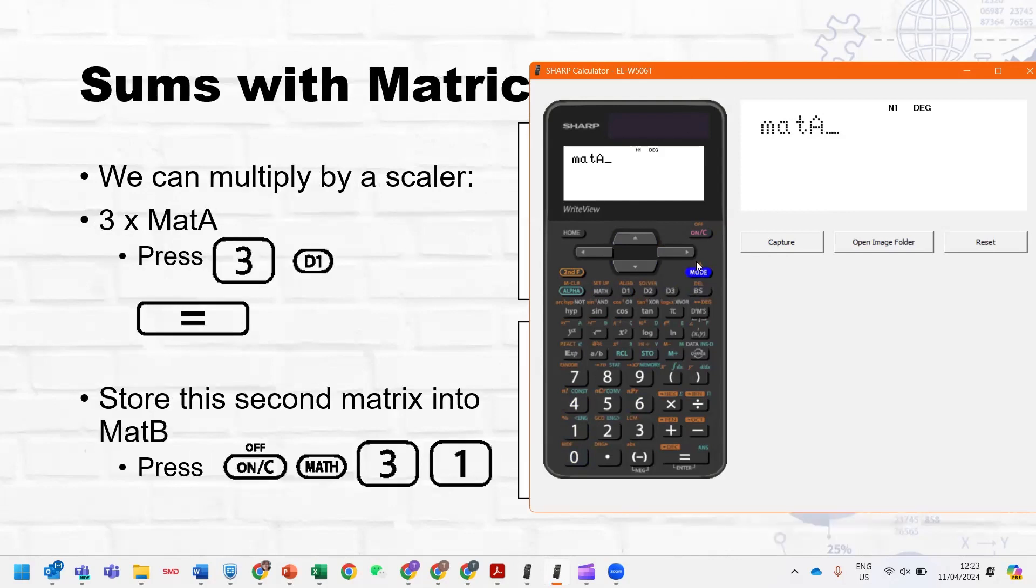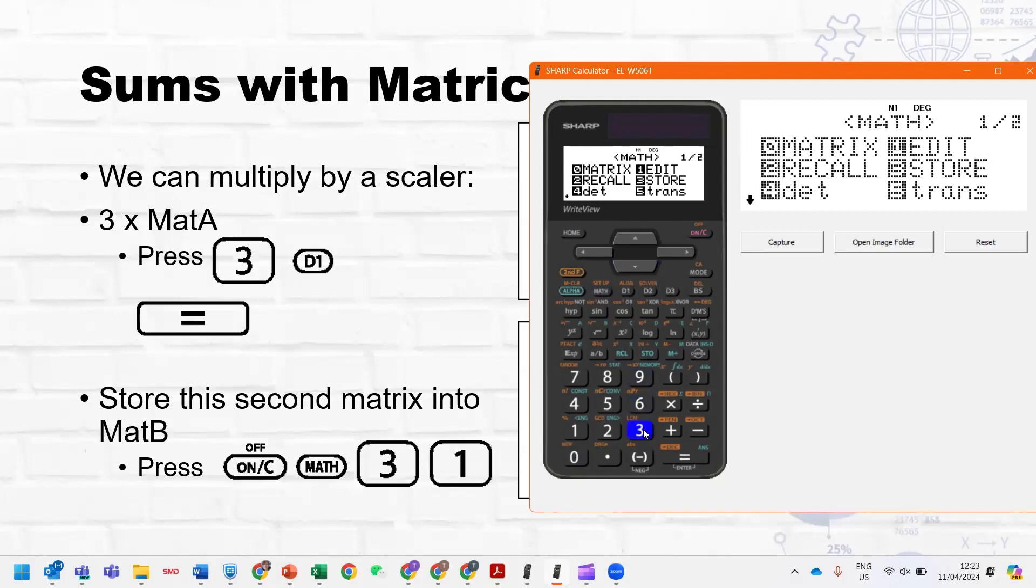So let's do some with them. So if, for example, we wanted to multiply the matrix A by three, you could then say three times matrix A, and you can see now I just press D1 and equals, and it gives me that calculation. What I'm going to do is save this into my matrix B. So I'll press on, and I'll press math, and I'll store it by pressing three and choosing one matrix B.